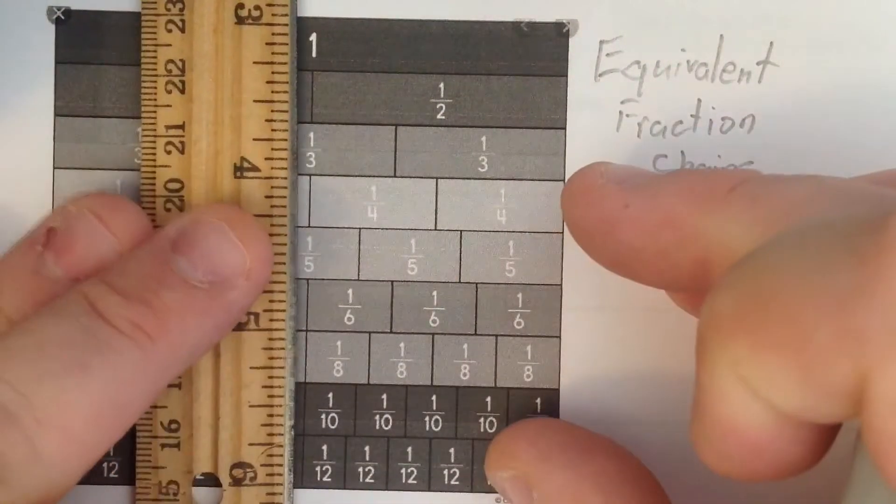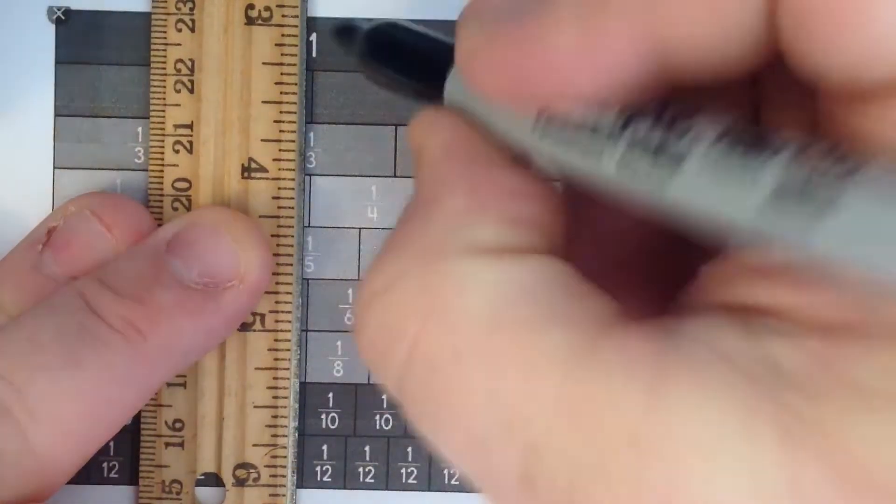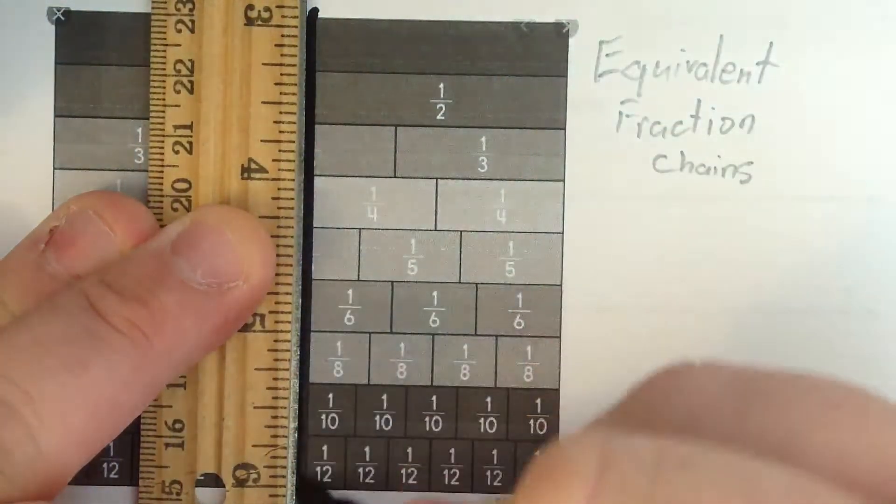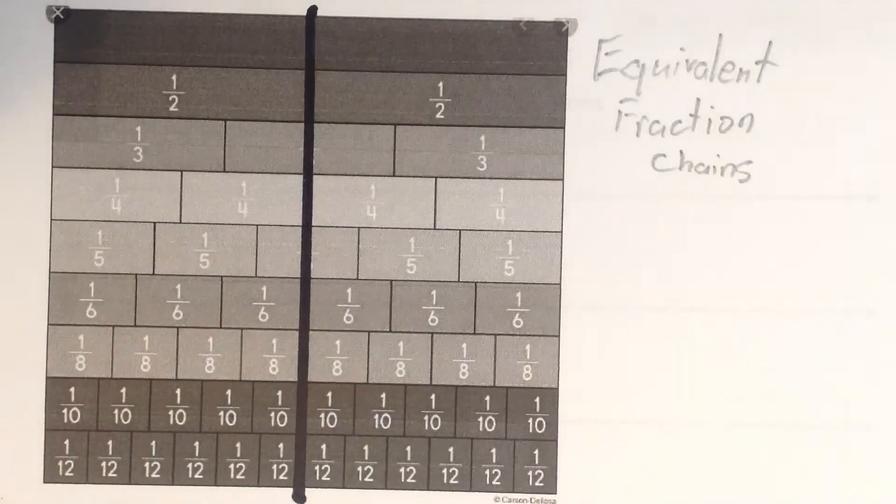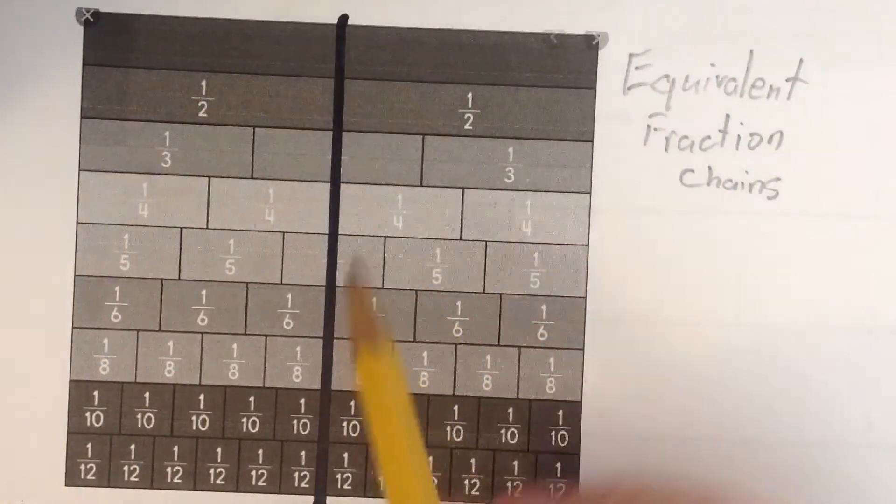For example, if I look at one-half here, some of these fractions line up with one-half. Like fifths, that doesn't line up because it cuts right through the middle of one of them.